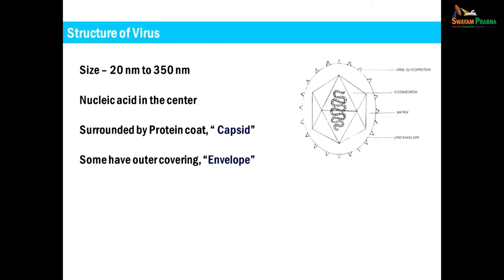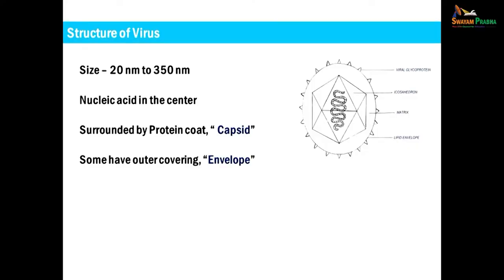Coming to the structure of a virus — viruses are extremely small. The ability of viruses to pass through filters which can hold bacteria is a characteristic attribute of viruses. The size of viruses ranges between 20 to 350 nanometers, and size can be determined by sedimentation in an ultracentrifuge or by electron microscopy. The extracellular particle of a virus is known as a virion. In the center of a virion there is a nucleic acid — DNA or RNA — surrounded by a protein coat known as the capsid. Some viruses have an outer covering known as an envelope. Viruses with an envelope are known as enveloped viruses; without envelope they are known as naked viruses.